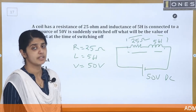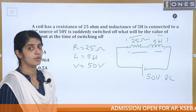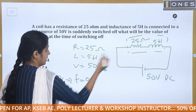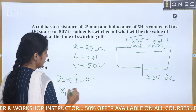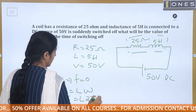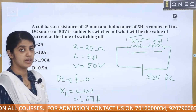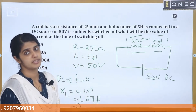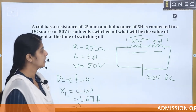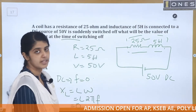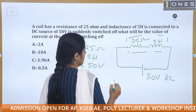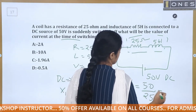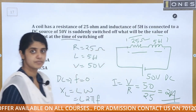This is an RL circuit and the supply is DC. For DC, frequency is zero. The reactance of the inductance XL equals 2πf — when DC frequency is zero, XL will be zero. The inductance has no effect. So the current at switch-off: I = V/R = 50/25 = 2A.